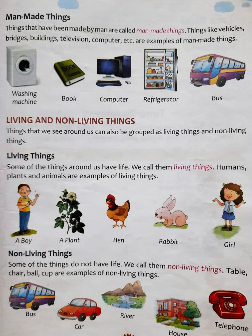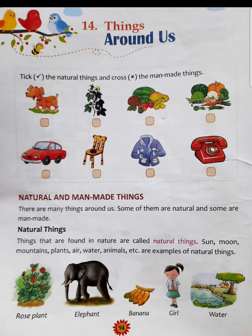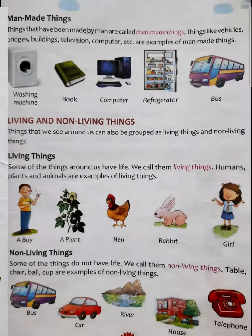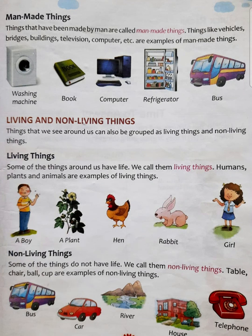Theek hai, toh ab jo hai aapka homework yeh hai: page number 94 par jo exercise di gayi hai, you have to complete it. And you have to read the chapter at least two times. In the next video we will discuss the different question answers and fill-ups related to the chapter. Read the chapter again and again, and learn the spellings of all the difficult words in this chapter. Thank you, goodbye, and have a nice day.